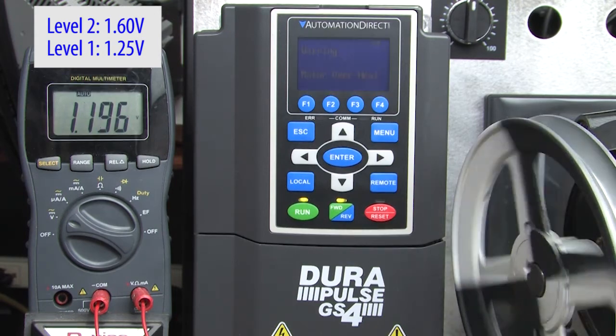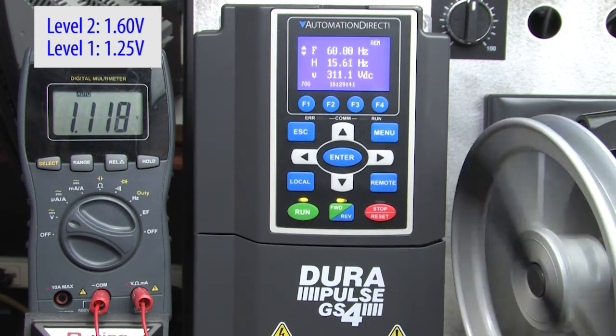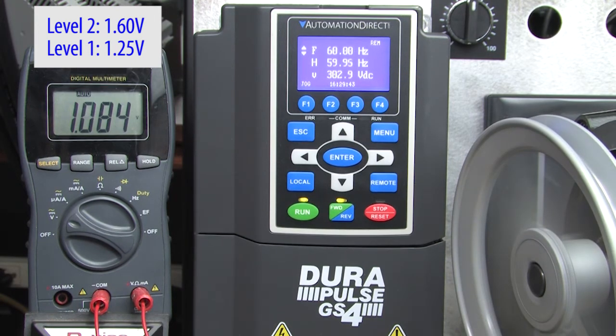If we cool the sensor off, the motor resumes speed and the fault goes away after the voltage has stayed below level 1 for that 5 second delay we set. That level 1 delay works on level 1's heating and cooling transitions. If we heat it up again, it passes level 1, drops a frequency and generates a fault just like before.